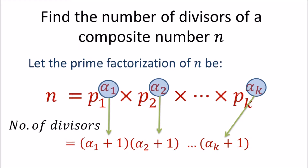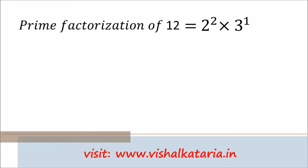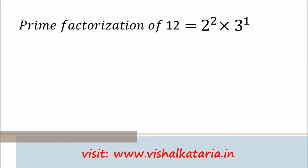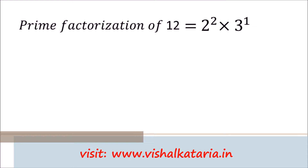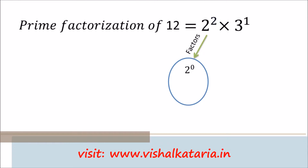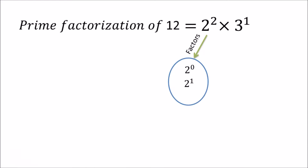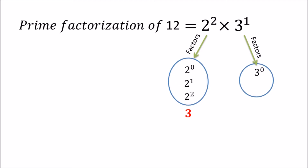Let's start with an example. The prime factorization of 12 is 2 raised to power 2 times 3 raised to power 1. Now, 2 raised to power 2 has 3 divisors: 2 raised to power 0, 2 raised to power 1, and 2 raised to power 2. Similarly, the divisors of 3 raised to power 1 are 3 raised to power 0 and 3 raised to power 1, so the total number of divisors of 3 raised to power 1 is 2.